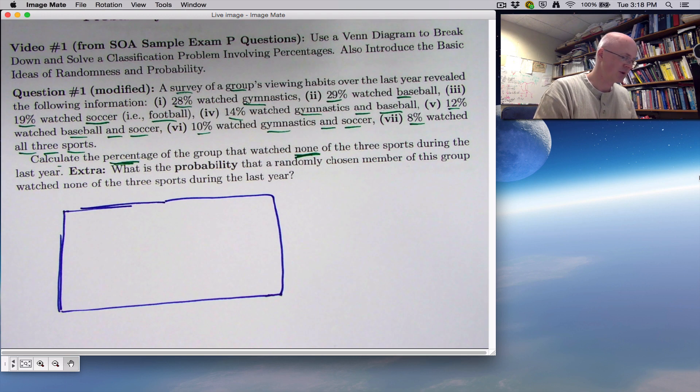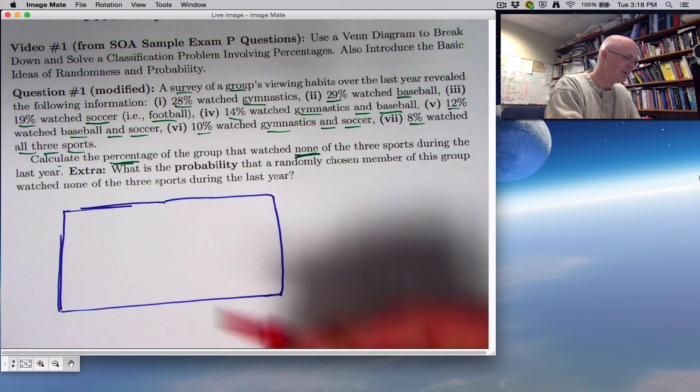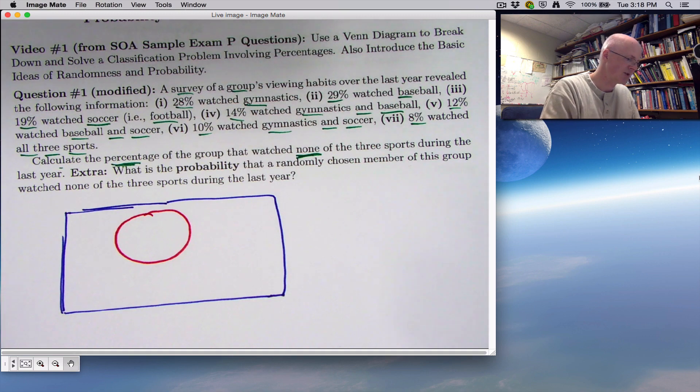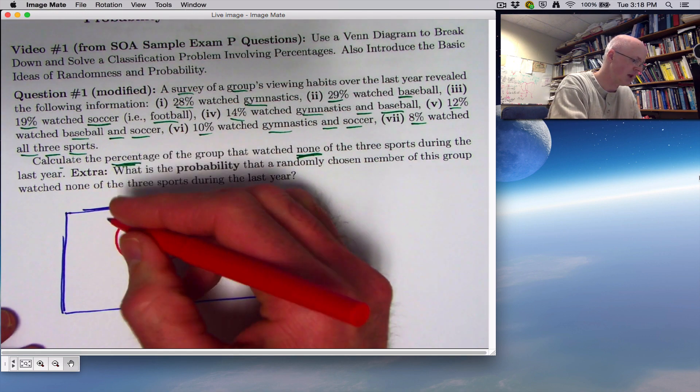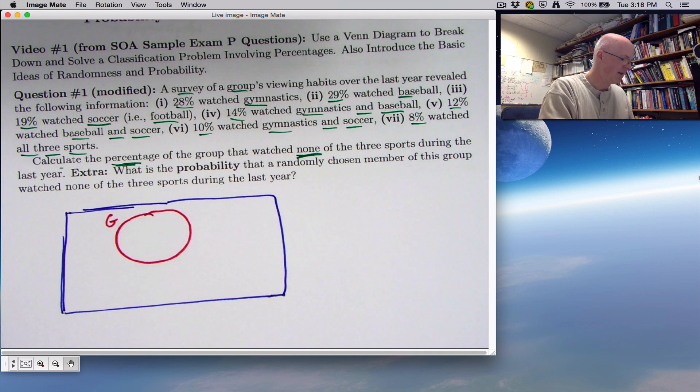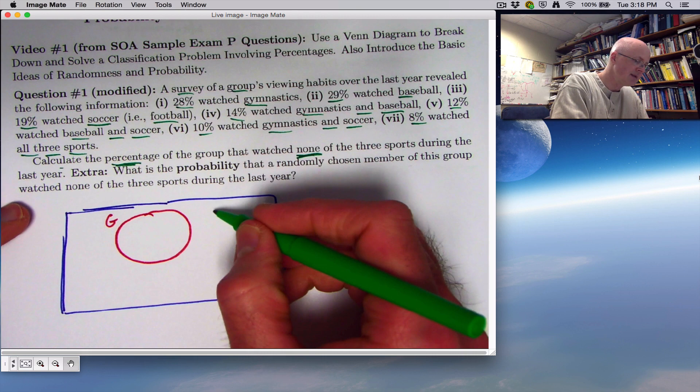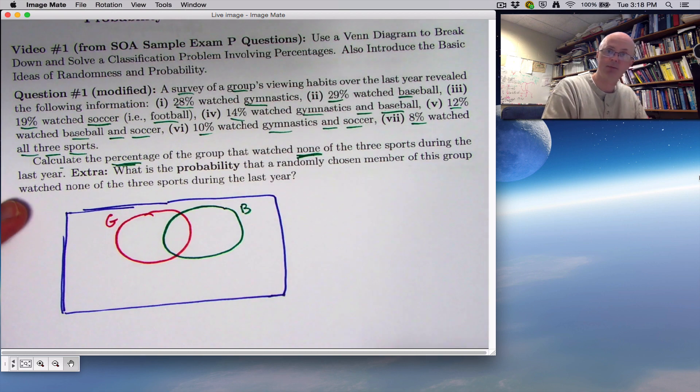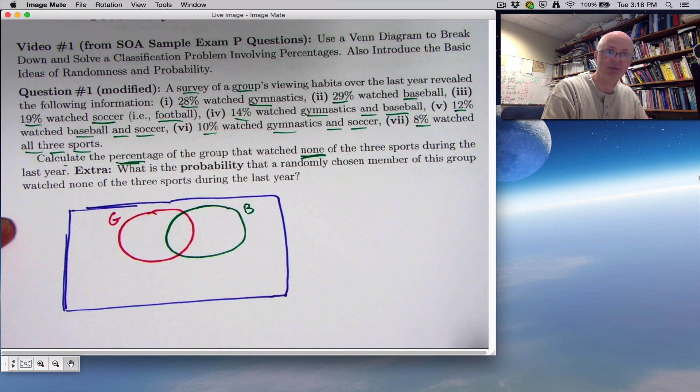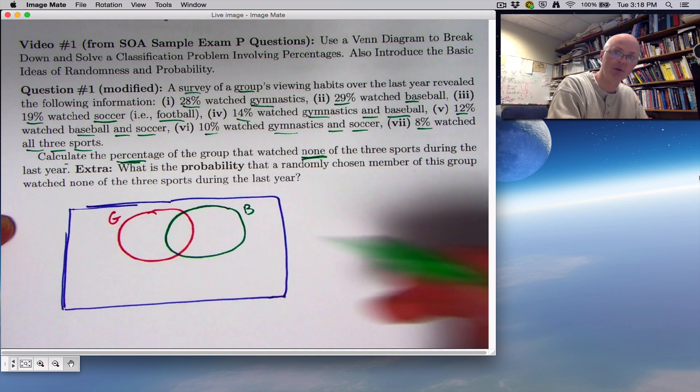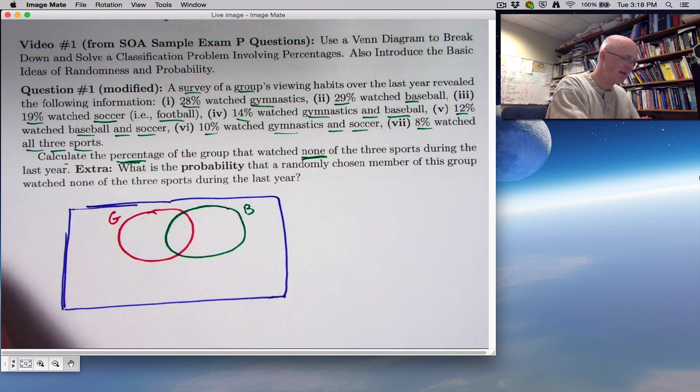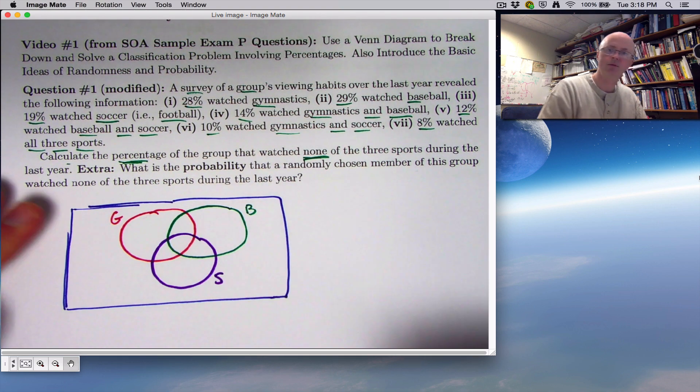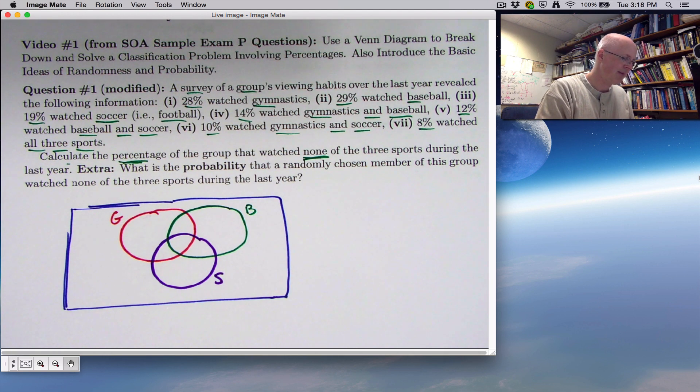You want to make three blobs or circles for these three sports. Let's put the gymnastics over here, making it kind of look like a circle. I'll call it G for gymnastics. Then we want to have baseball. Some people watch both, right? There's overlap between the people who watch gymnastics and people who watch baseball. So if somebody watched both gymnastics and baseball during the last year, they want to stand in both circles. And finally, you've got the blob or circle for soccer. Of course, again, that's called football in every country but the United States.